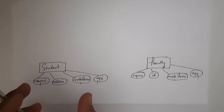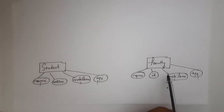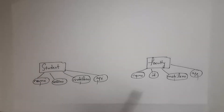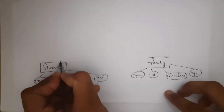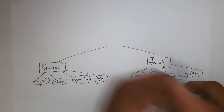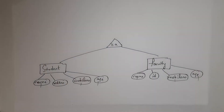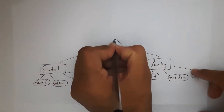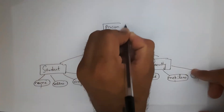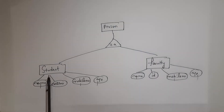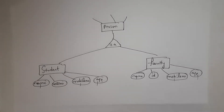Now, by selecting the common attributes from these two entities, I will create one new entity. That entity's name is 'Person.' Student is a person and faculty is a person. So, by using these two entities, I will create one new generalized entity called Person, combining the student and faculty entities using an IS-A relationship, which is written in a triangle. The common attributes — name, mobile number, and age — are added to the person entity.